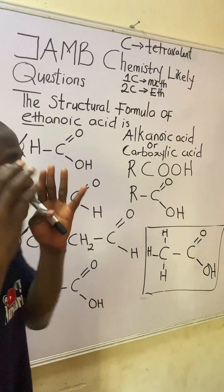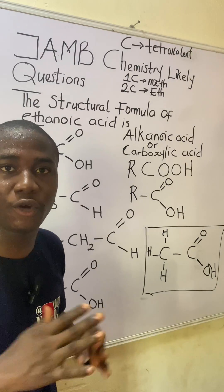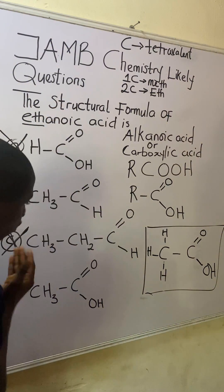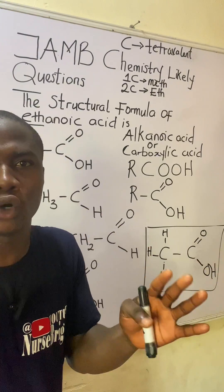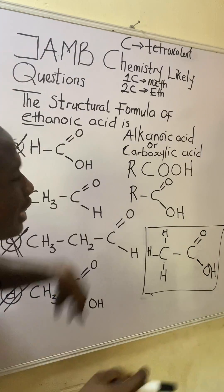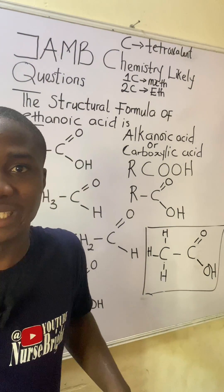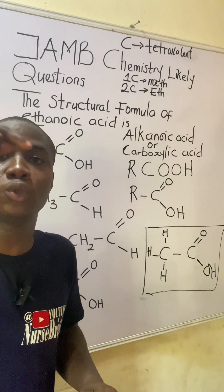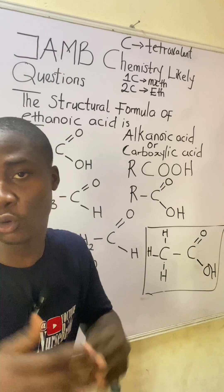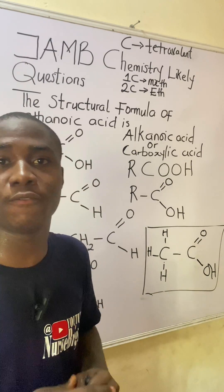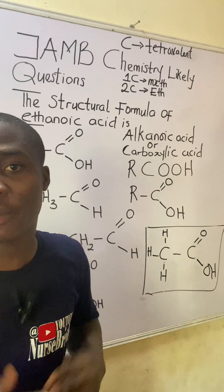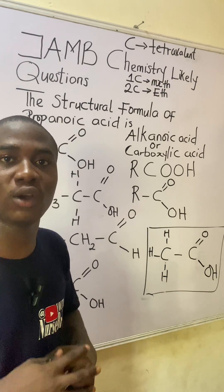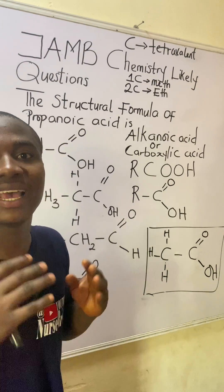I believe you now understand the concept of how this answer was found. First, do your elimination — since ethanoic acid should contain two carbons, any option with more than two carbons is already out. I hope this video lesson was helpful. If so, click the subscribe button on YouTube or the follow button on TikTok, share with your friends, and get ready for your own practice question. Thanks for watching.